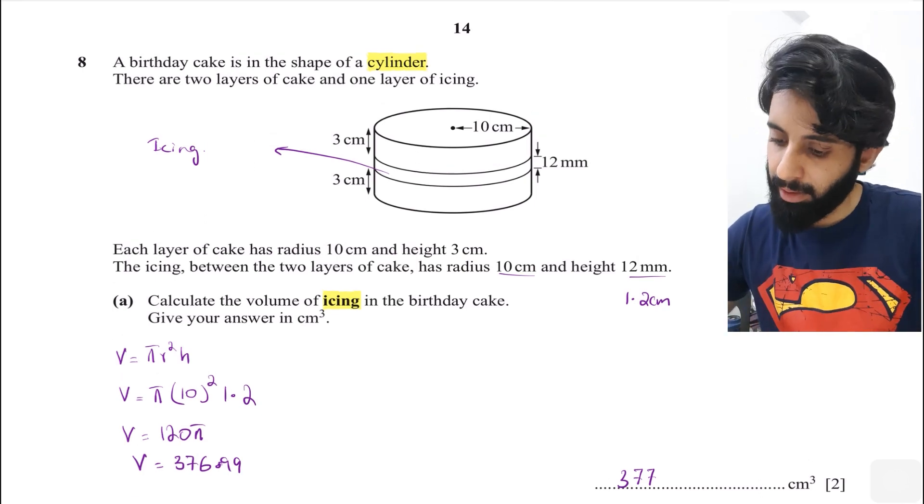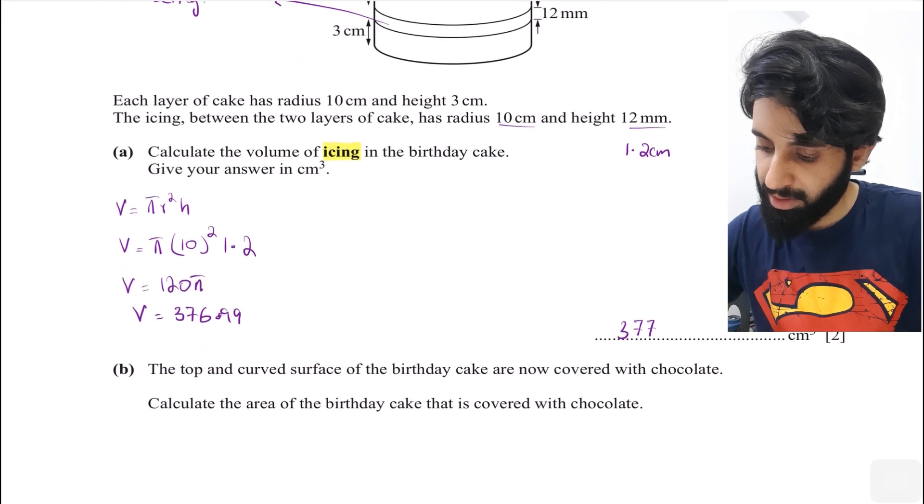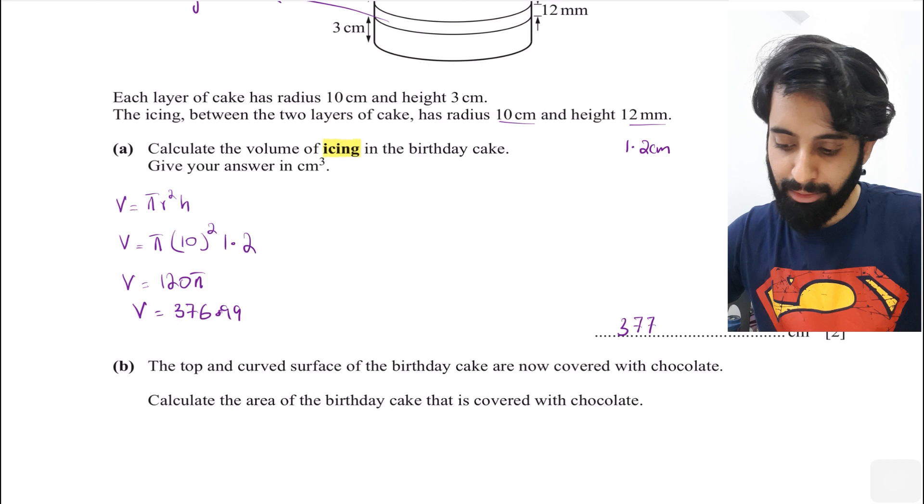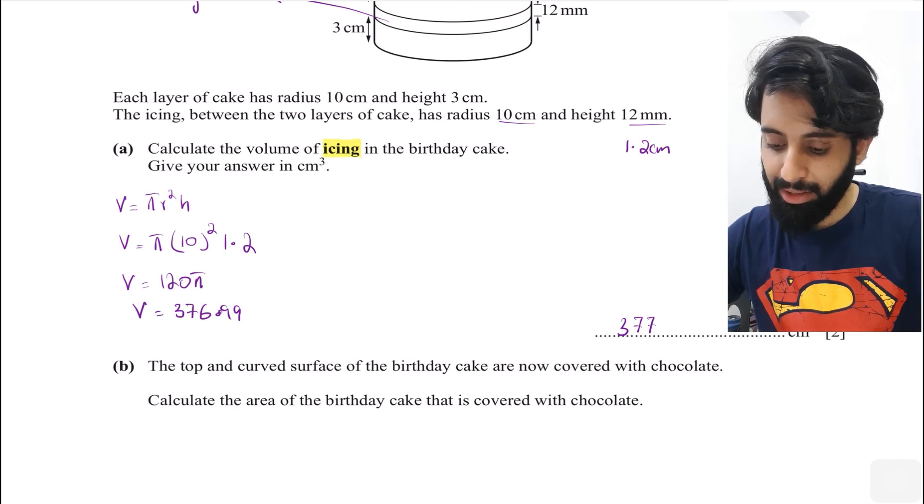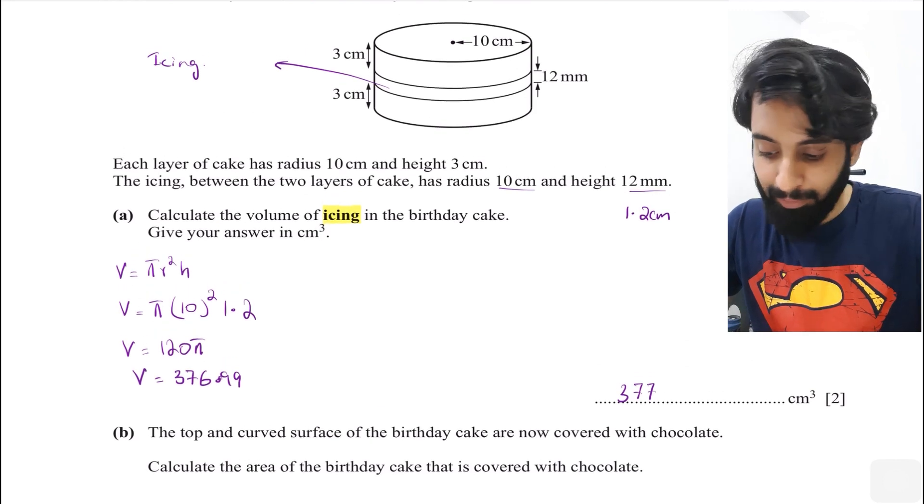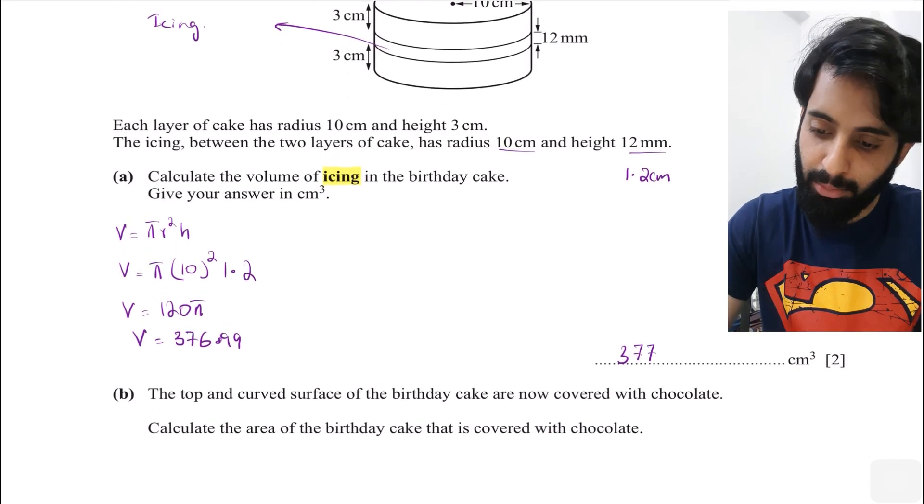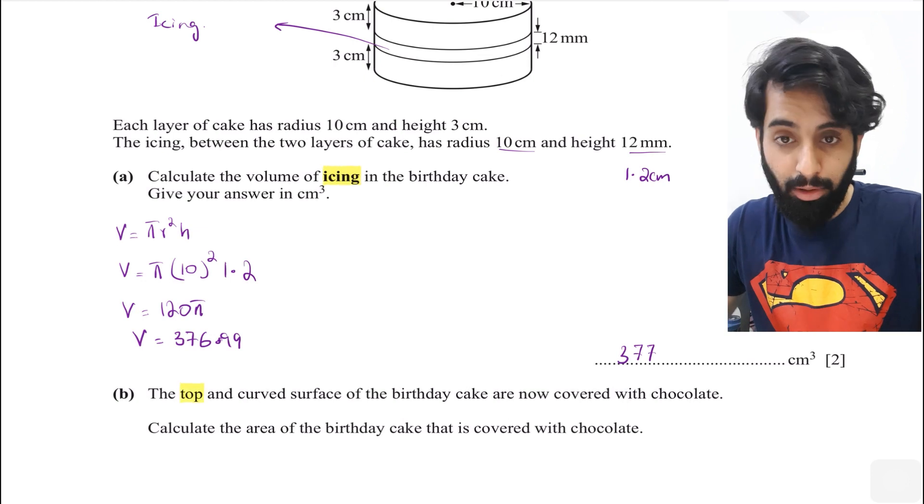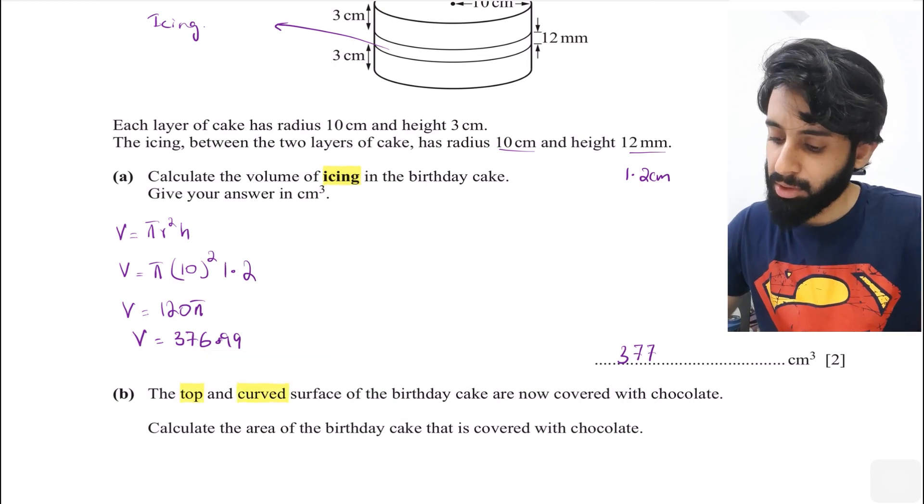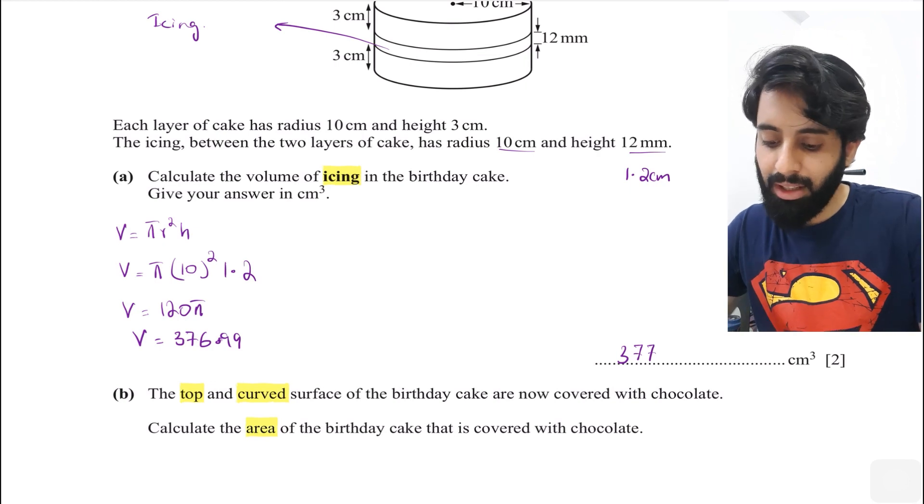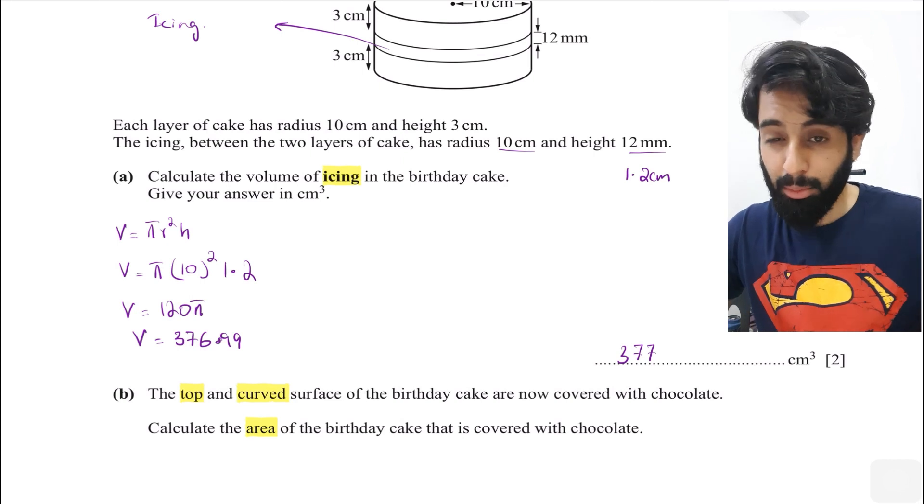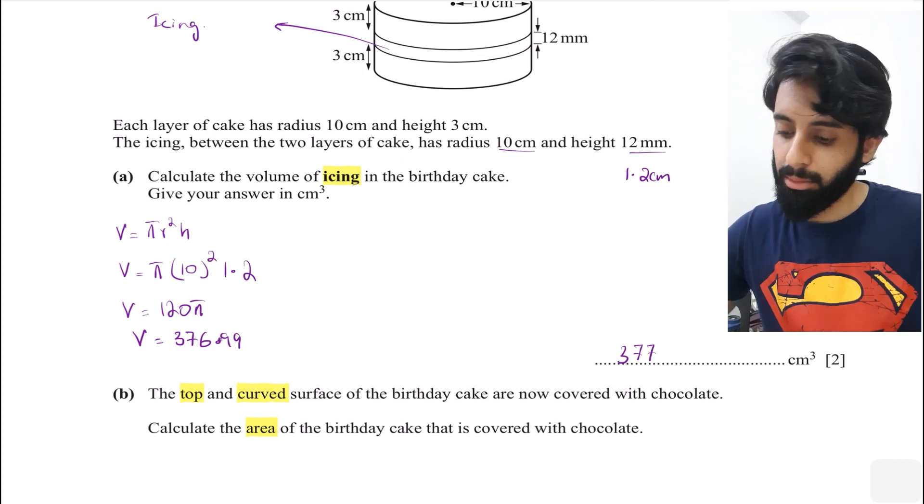Now part B says the top and curved surface of the birthday cake are now covered with chocolate. Calculate the area of the birthday cake that is covered with chocolate. Let's go back to the question and highlight what's important - the top and the curved surface of the birthday cake are now covered with chocolate.